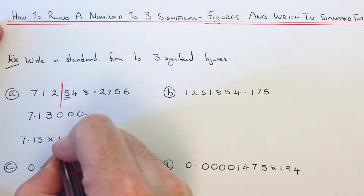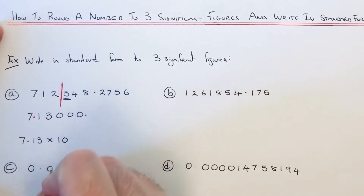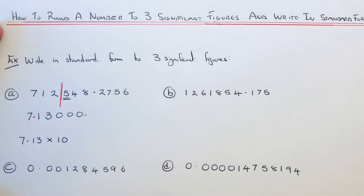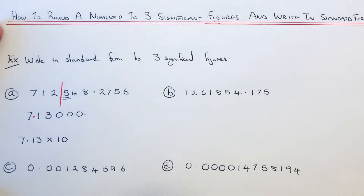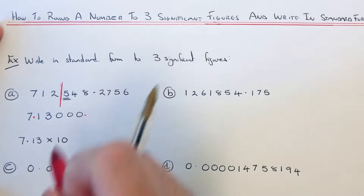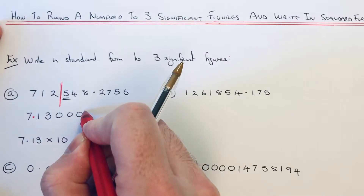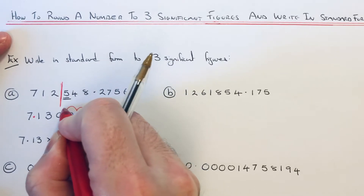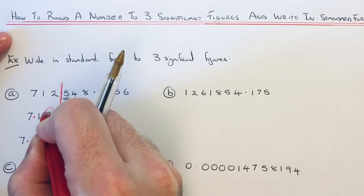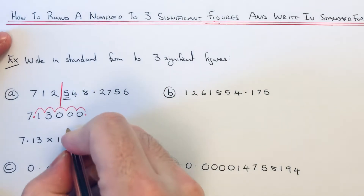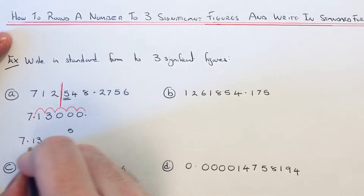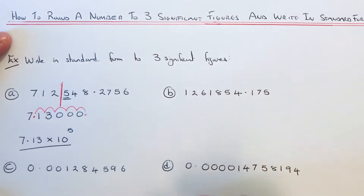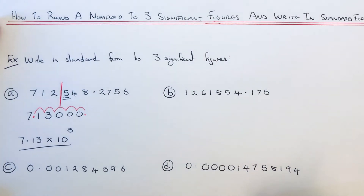Figure out how many times we need to multiply it by ten to give us the original number — just count the jumps between the decimals. It is one, two, three, four, five. So the answer is 7.13 × 10^5.